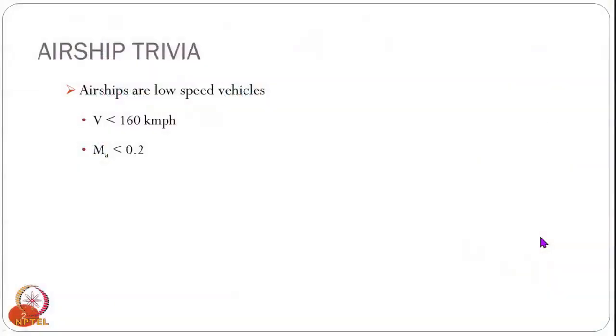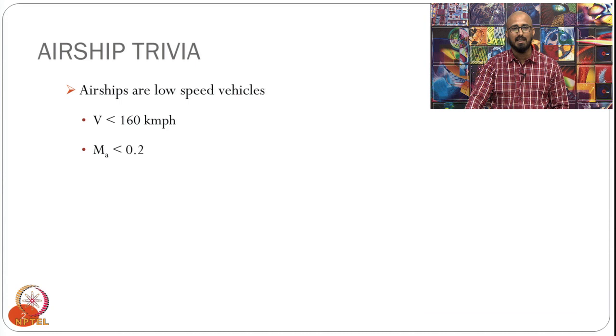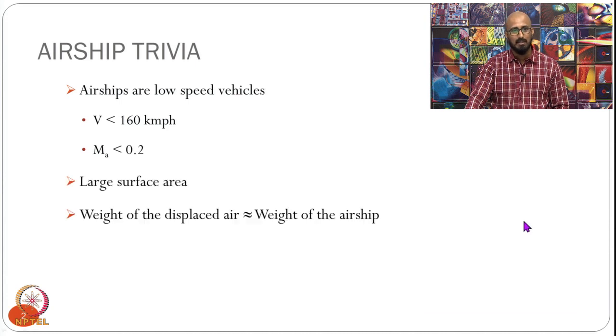In this talk I am going to talk about the dynamics of airships. Let us look at a few obvious facts we already know about airships. We know that they are low speed vehicles — they operate at less than 160 kilometers per hour, which corresponds to a Mach number of about 0.2. They also have large surface area, and we know that they are buoyant vehicles.